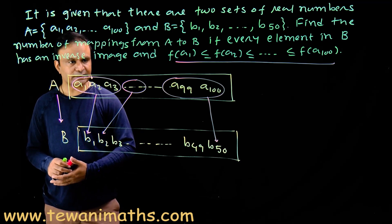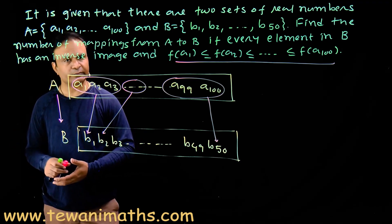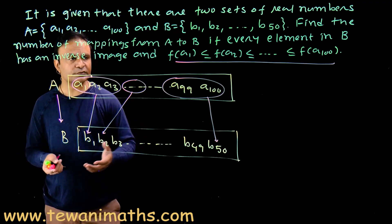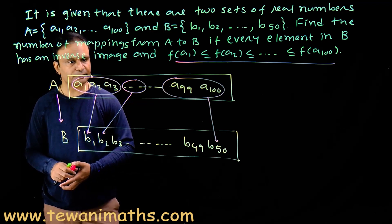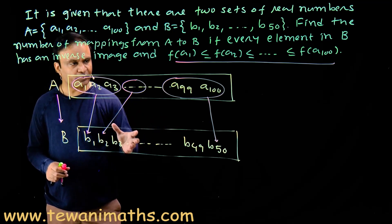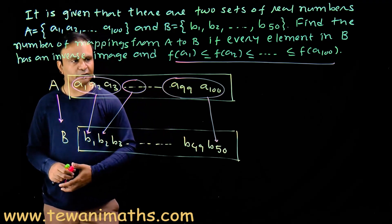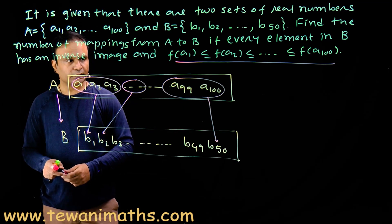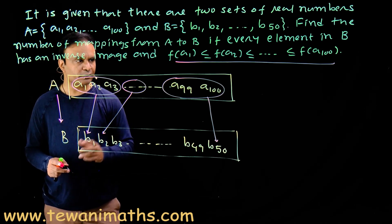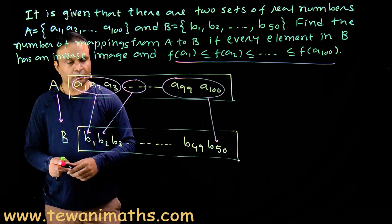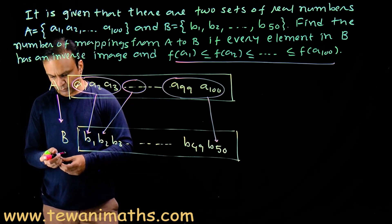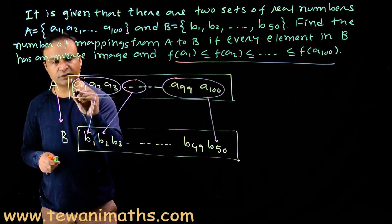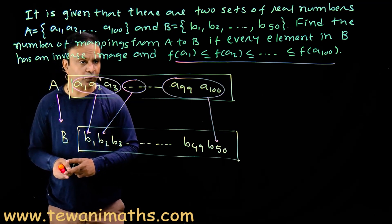Now the question arises: how many 50 non-empty groups can be formed? The number of ways in which we can form 50 non-empty groups is equal to the number of mappings. The question reduces to: in how many ways can we form 50 non-empty groups maintaining the order of the subscripts? To form 50 groups we use the partition method, using 49 partitions.